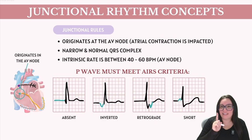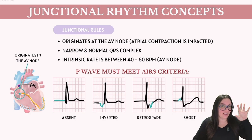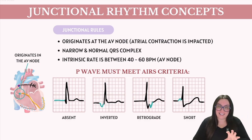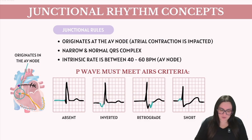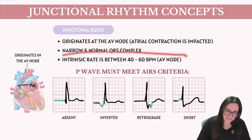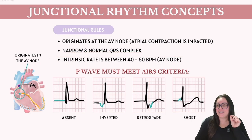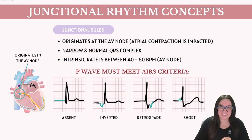What's interesting here is that the intrinsic rate is going to be a little bit different. Remember when we talked about the SA node and the AV node — they both have their own set of intrinsic rates. The AV node has an intrinsic rate of 40 to 60 beats per minute. This is going to be really big when we're talking about these junctional rhythms.